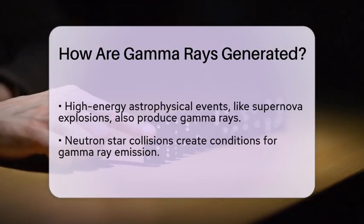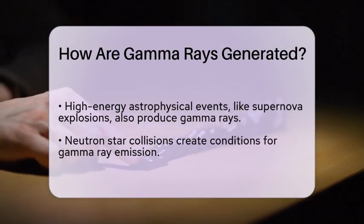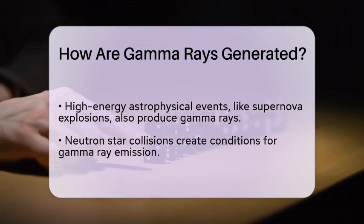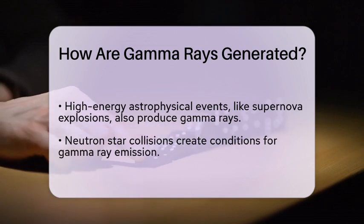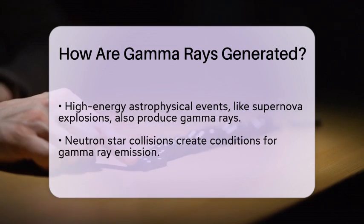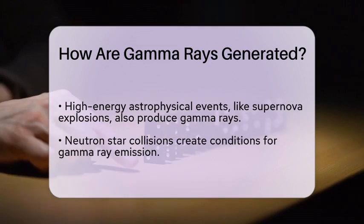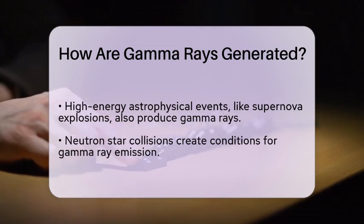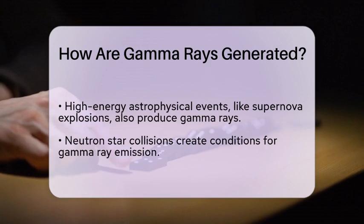Additionally, gamma rays can be produced in high-energy astrophysical events, such as supernova explosions or the collision of neutron stars. These extreme conditions create environments where particles are accelerated to nearly the speed of light, resulting in the emission of gamma rays.